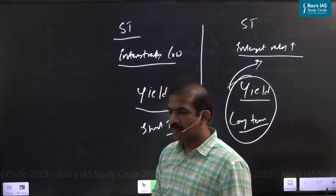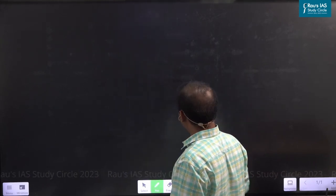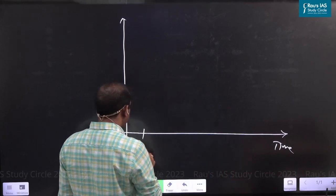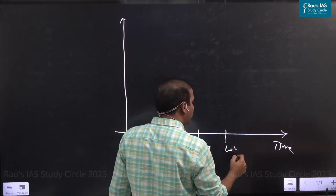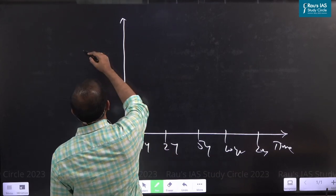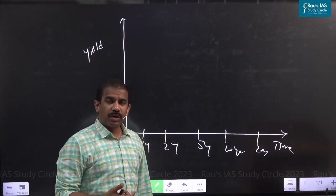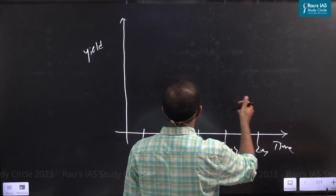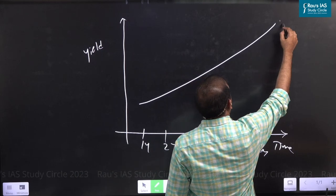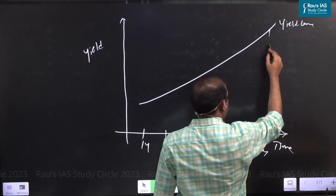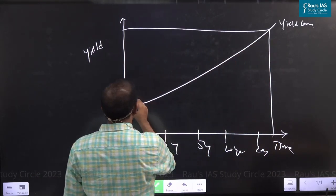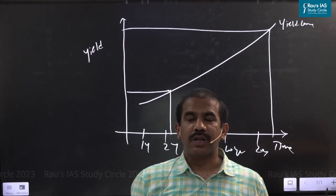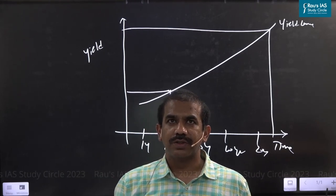Because lending long term is more risky, people expect higher interest rates for long-term loans. So for short-term instruments, interest rates are low, while for long-term instruments, interest rates are high. By the same logic, the yield on long-term bonds is relatively higher than the yield on short-term bonds. If you draw the yield curve with maturity period on the x-axis — one year, two years, five years, ten years, twenty years — and yield on the y-axis, the curve slopes upward. This is the typical shape of the yield curve.